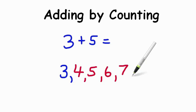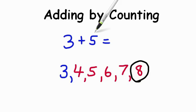So 4, 5, 6, 7, 8. So the number we land on is 8. 3 plus 5 equals 8. Nice job.